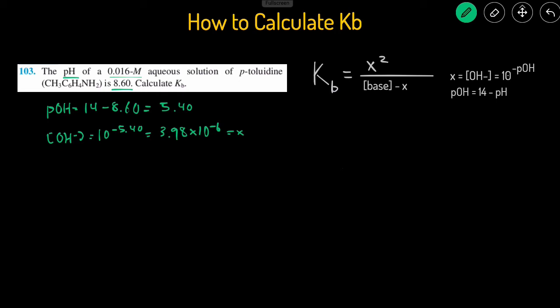So now that we have the x, we can just plug the x value into this equation. That means that Kb is going to equal x squared divided by the concentration of the base, 0.016, minus the x value.